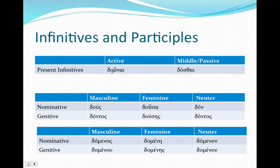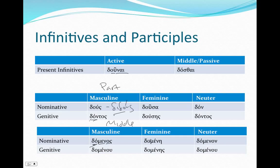Infinitives and participles — we get a little bit of contraction here: dounai, dosthi. And then in our participles: dous, dousa, doun. What's the difference between this and the present tense? The present tense will be reduplicated; the simple stem is the aorist. And didontos. In the middle, we get our short stem: men, dosthous, domenos, mene, dominon, menu, domines, and so on.